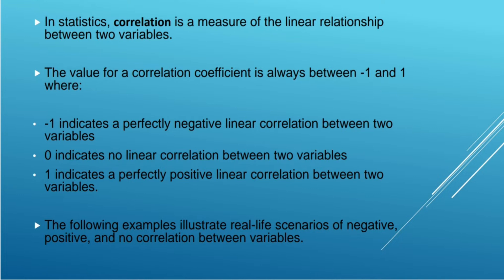The value of correlation coefficient is always between minus 1 and 1. Minus 1 indicates a perfectly negative linear correlation between two variables. 0 indicates no linear correlation between two variables. 1 indicates a perfectly positive linear correlation between two variables.